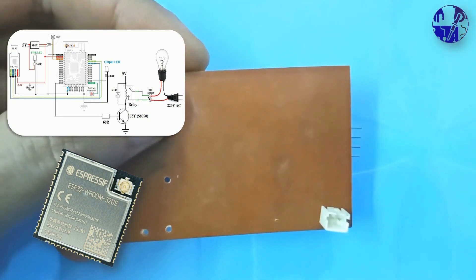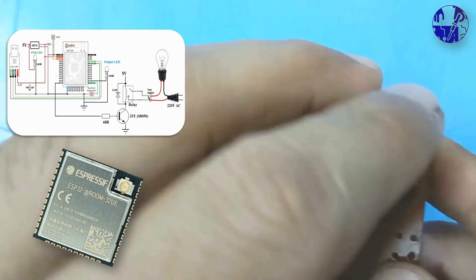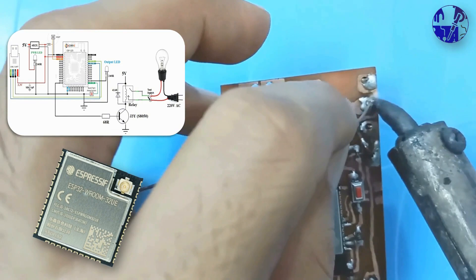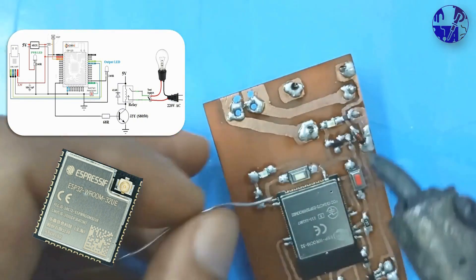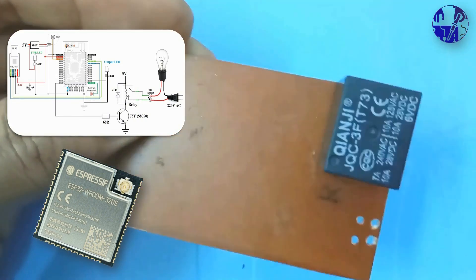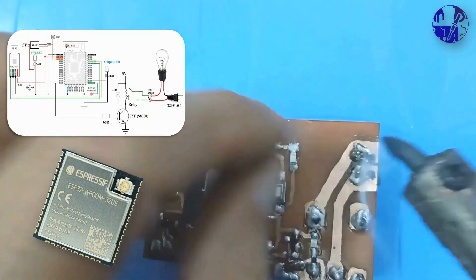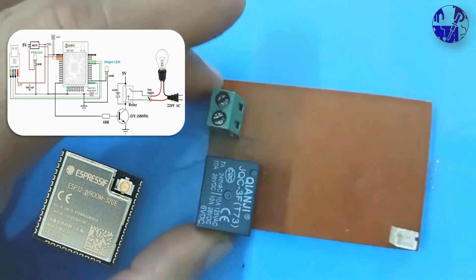Equipped with numerous ADC channels and GPIOs, we can effortlessly connect a variety of sensors and output devices. With this chip, we can gather data from connected sensors and transmit it in real-time over the internet to any location worldwide.